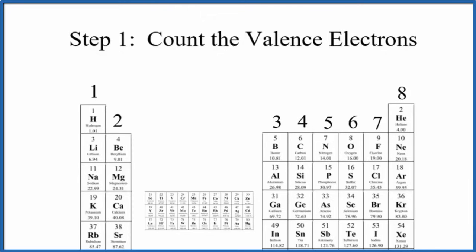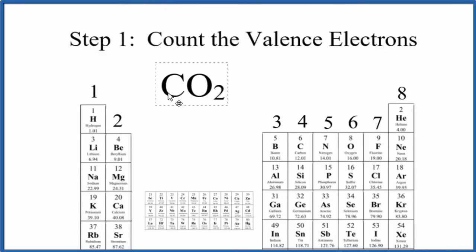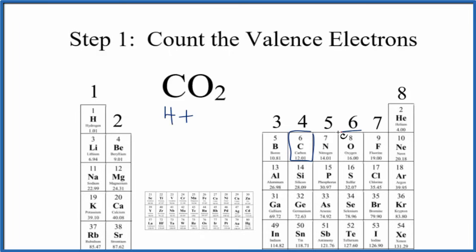Let's try this for carbon dioxide, CO2. We find carbon in group 14, sometimes called 4A — that has four valence electrons. Oxygen is in group 16, sometimes called 6A, and has six valence electrons. We have two oxygens, so we multiply by 2. That gives us 4 plus 12, for 16 total valence electrons for CO2.